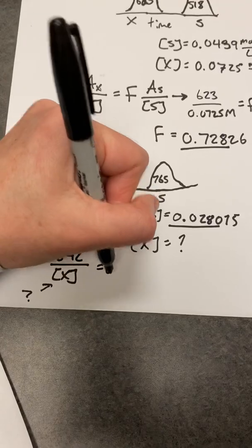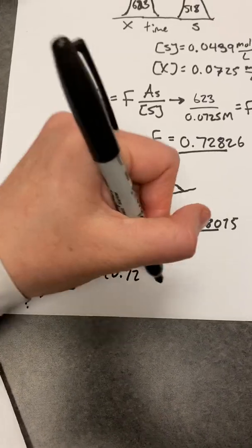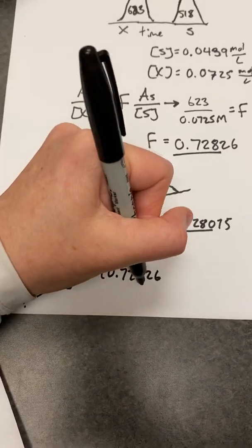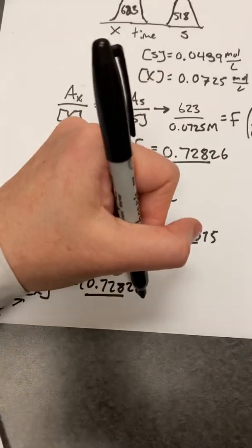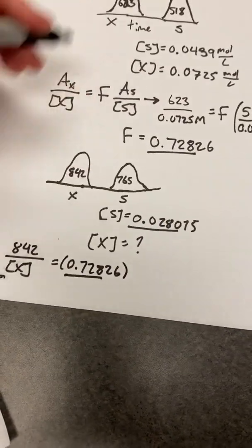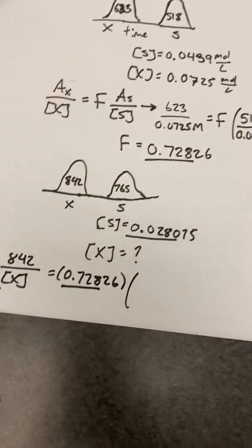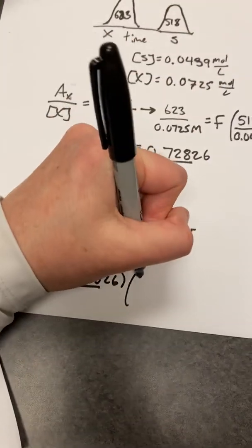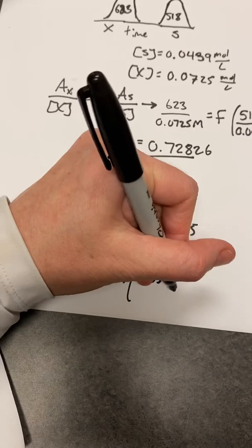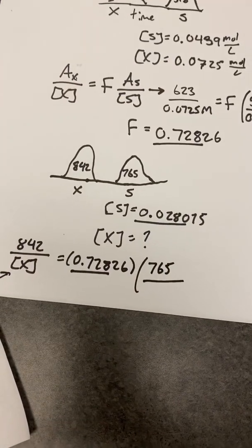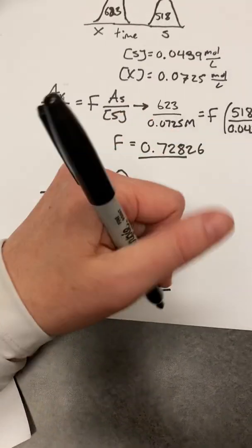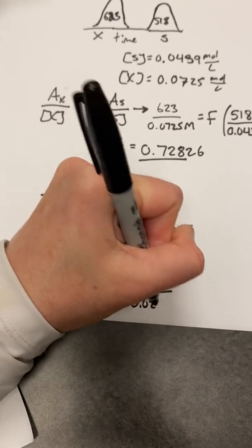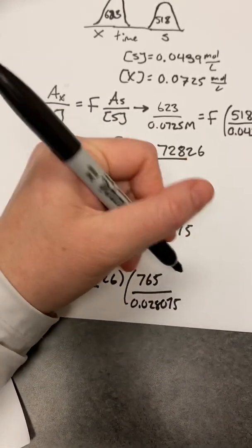And we're going to set that equal to F times the area of our standard, which is 765, divided by the concentration of our standard, which is 0.028075 mol per liter.